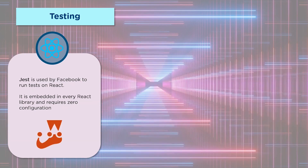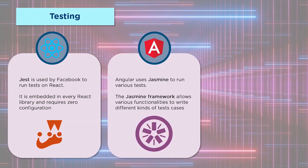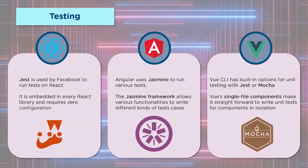Let's move on to testing. Jest is a framework developed by Facebook and is used to run tests on React applications to ensure they are bug-free. It is embedded in every React library and requires zero configuration. Angular uses the Jasmine framework, which allows various functionalities to write different kinds of test cases and ensures the application is error-free. The Vue CLI has built-in options for unit testing with Jest or Mocha. Vue has single file components and these components can be tested in isolation, making it modular and extremely fast.